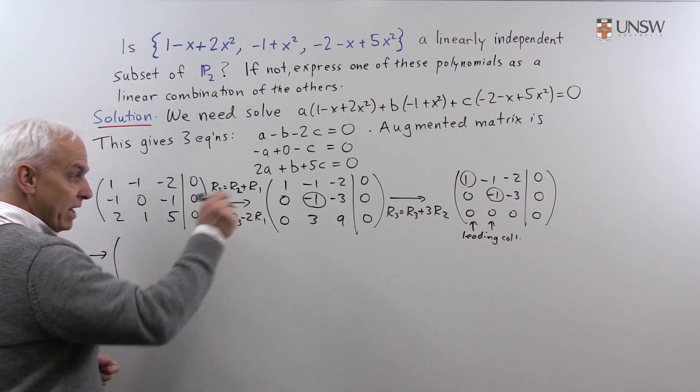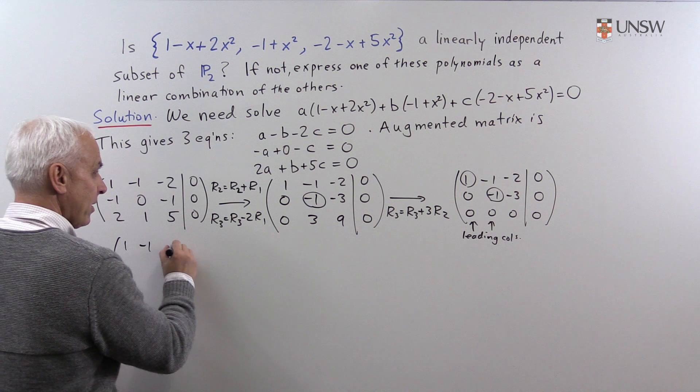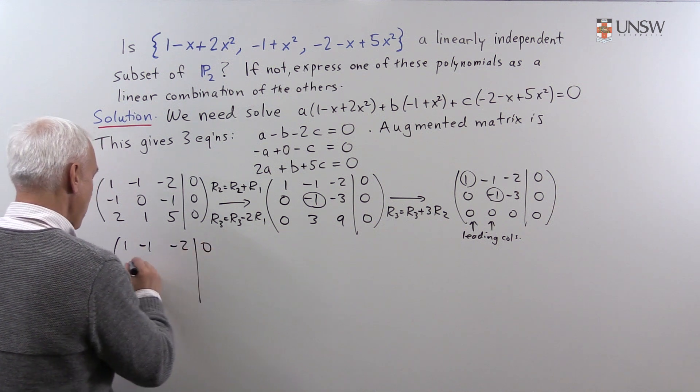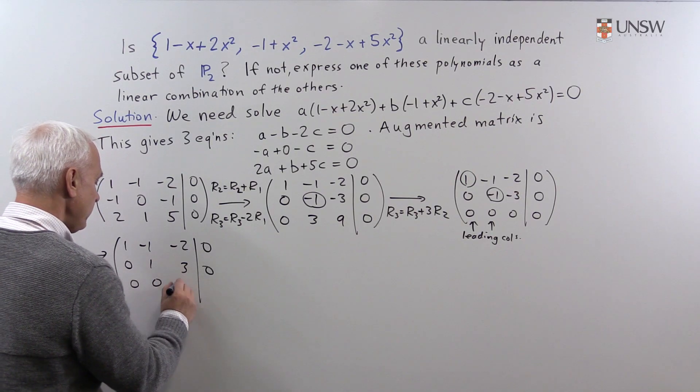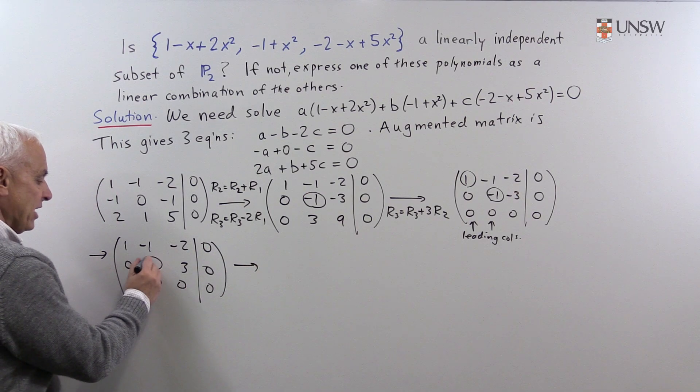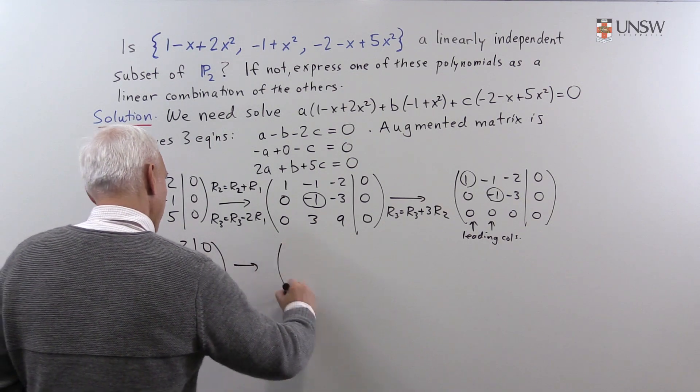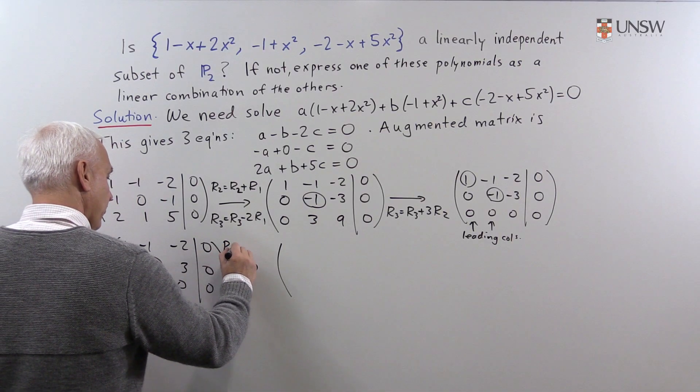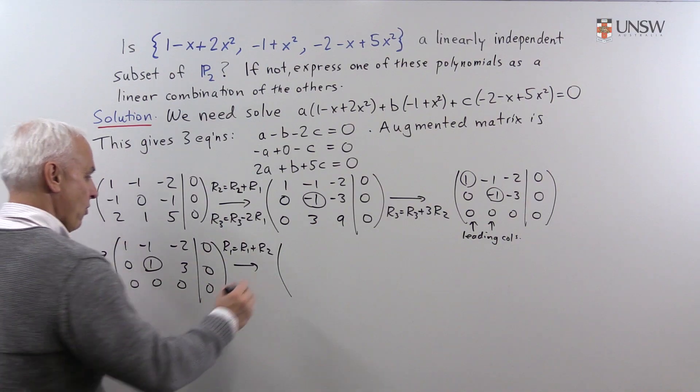First of all, I'm going to multiply the second row just with minus 1. So, we have a 1 there. And then I'm going to take this leading entry and use it to eliminate the entry above it.